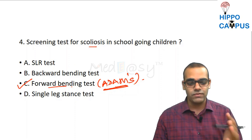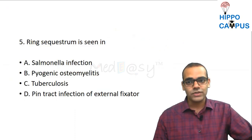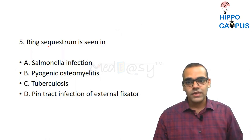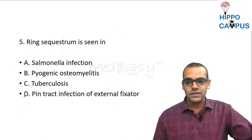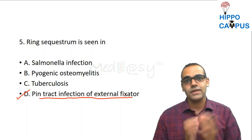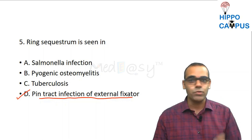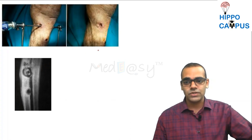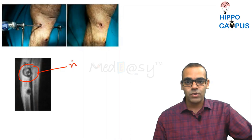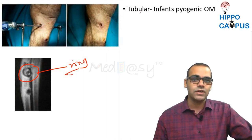Question 5: Ring sequestrum — a repeat question. Ring sequestrum is classically seen in pin tract infection of external fixators. Whenever there is skeletal traction or external fixator, if the skeletal pins inside the bone get infected, there will be a sequestrum shaped like a ring due to the shape of the infected bone around the pin.